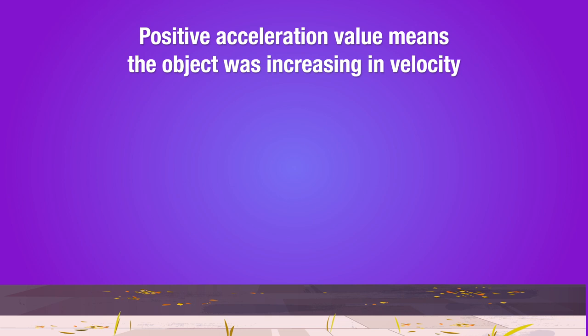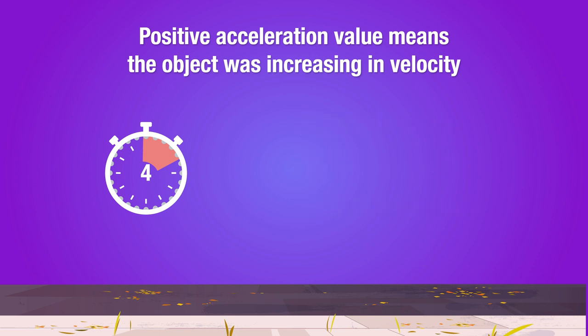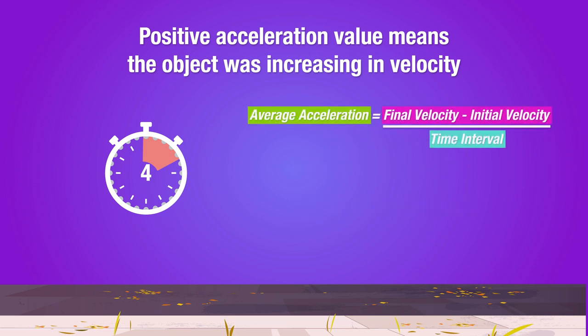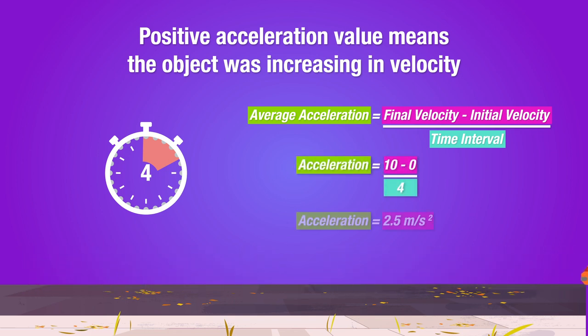Now let's test this equation with some examples. Let's say we have a car that's starting off from rest and speeding up to 10 meters per second over 4 seconds. What was its average acceleration? Since the car ended up at 10 meters per second, that's the final speed. And since the car started from rest, the initial speed is 0 meters per second. This entire process took 4 seconds, and when we plug this into the equation, we get 2.5 meters per second squared as the acceleration.